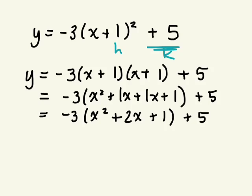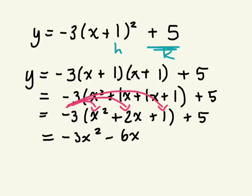Now I need to distribute the negative 3. Negative 3 times x squared, negative 6x. Negative 3 times positive 1 is negative 3. What's negative 3 plus 5? Positive 2.